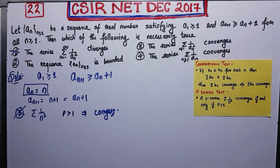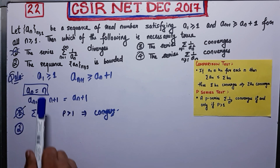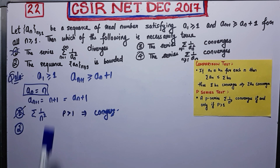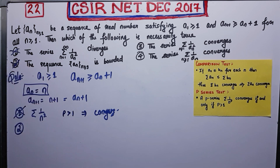Option 2 says the sequence a_n is bounded. But with our example a_n = n, this sequence is unbounded. Therefore option 2 is also incorrect.